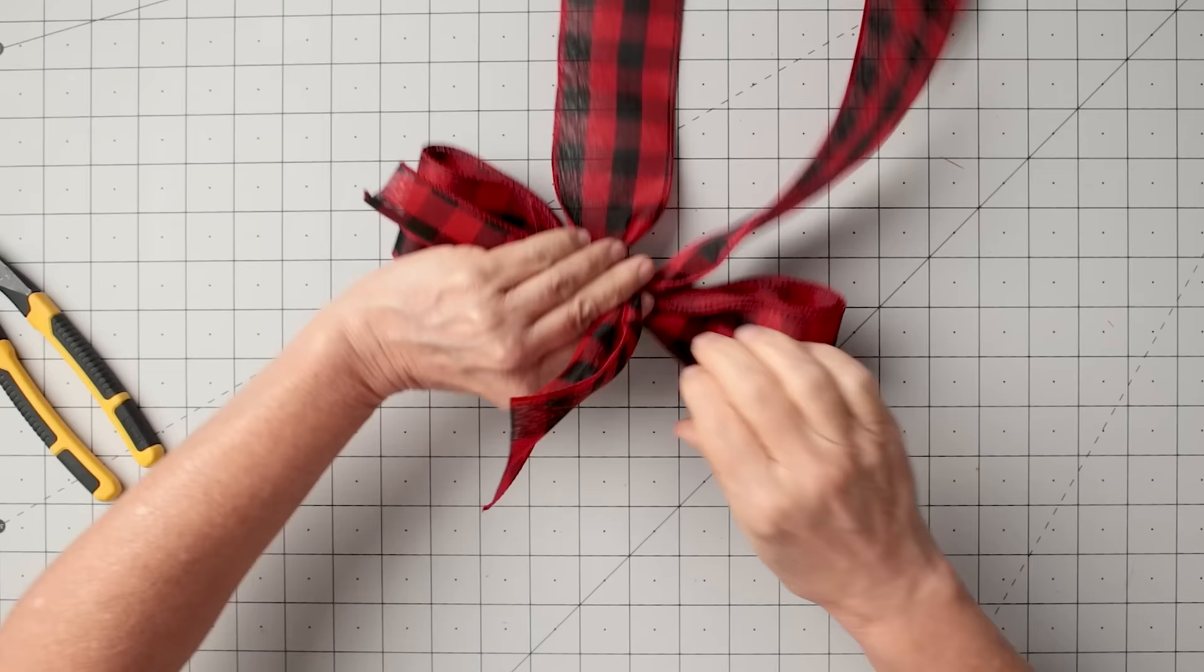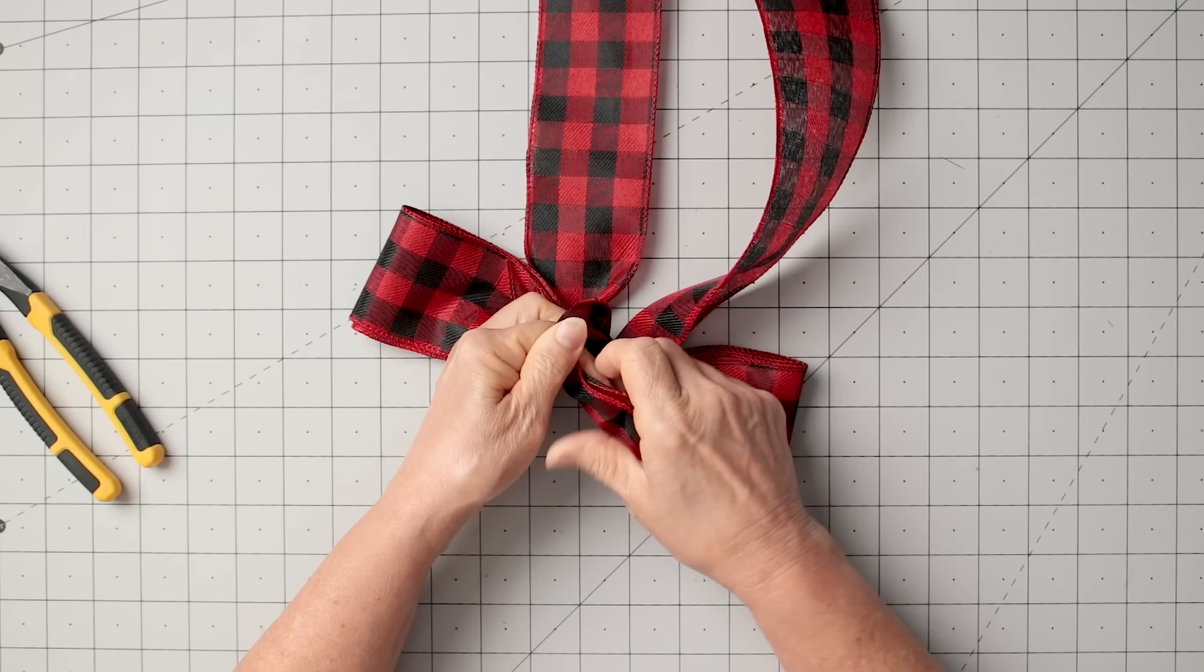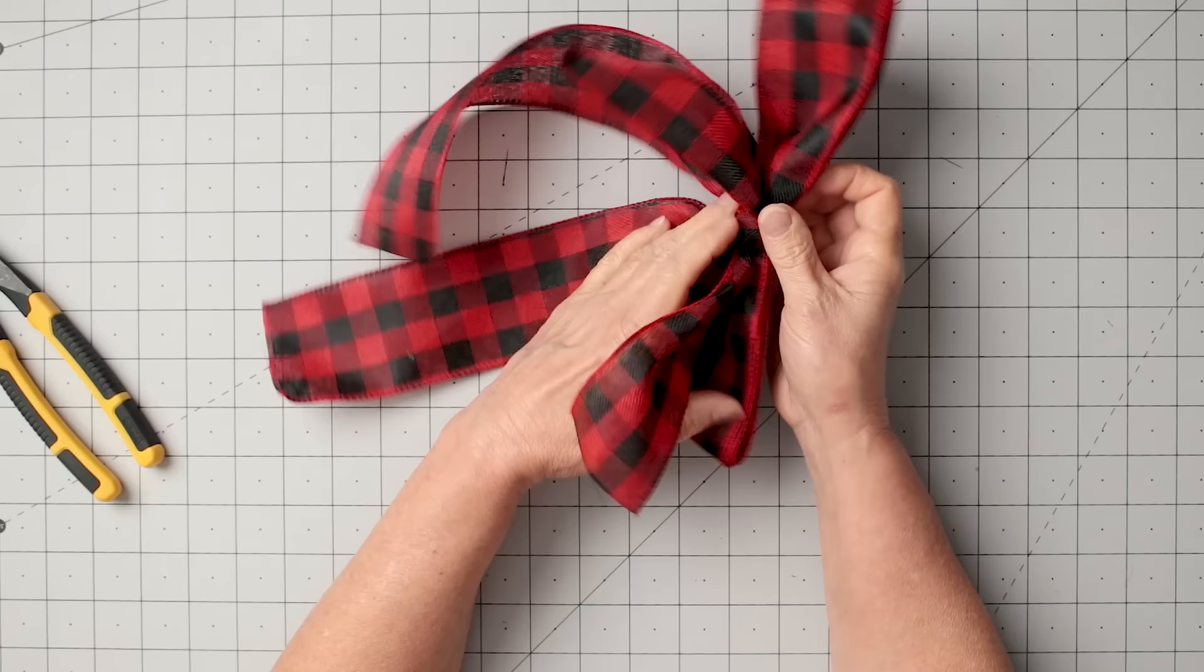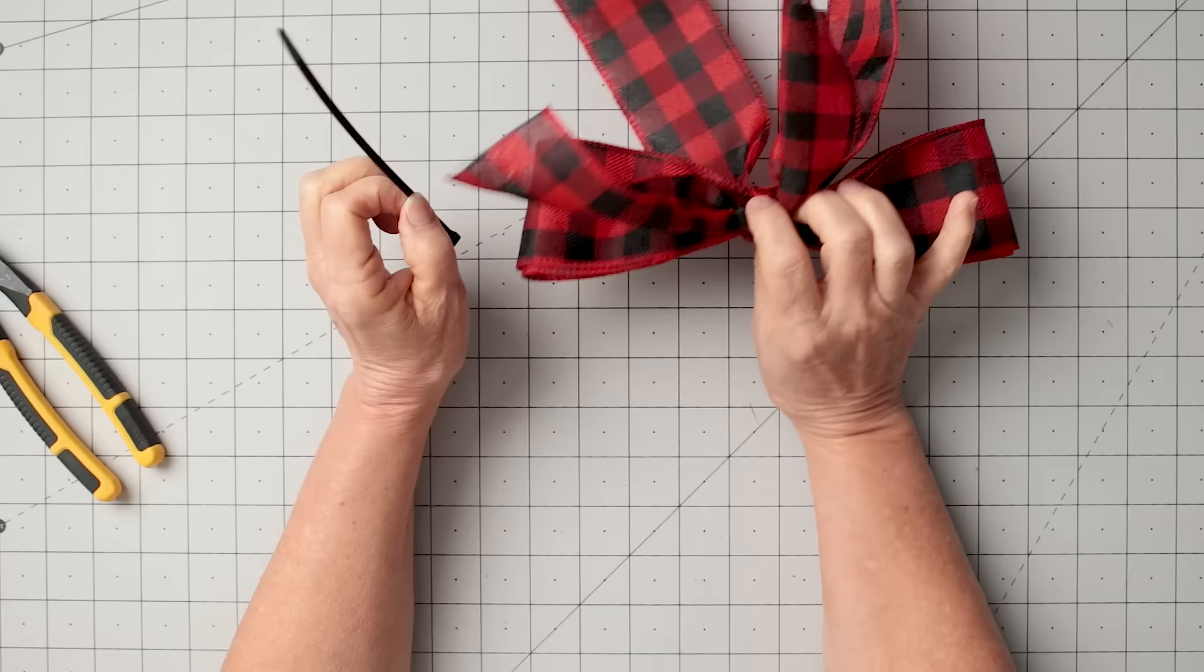So I'm tying this off. Like I told you before, you want to make those long enough if you want to tie it around something—onto a gift, onto a wreath, onto anything that you might want. You make it kind of long, or you can pull some wire through it, which I'm actually going to do, or a zip tie.